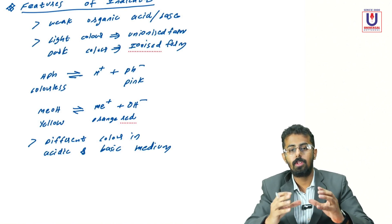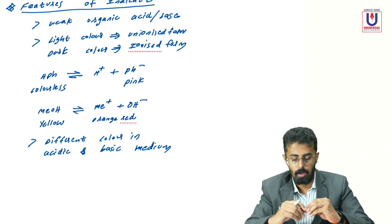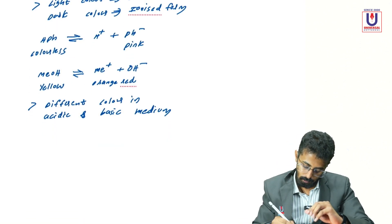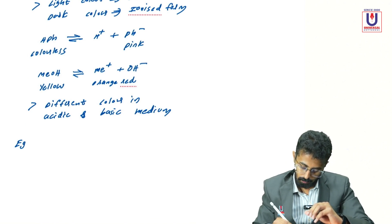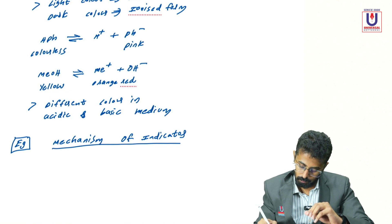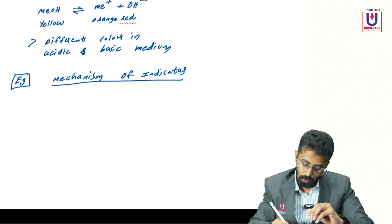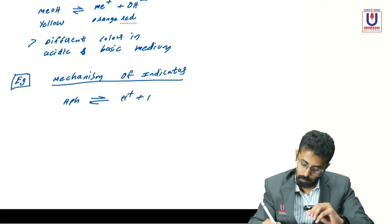Now let us look at the mechanism of how an indicator changes color in acidic and basic medium, using phenolphthalein as our example. Phenolphthalein dissociates as: HpH ⇌ H⁺ + pH⁻.